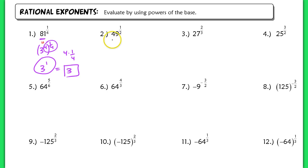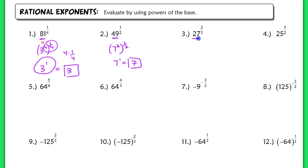In number 2, rewrite the base 49 as 7 squared. 7 squared raised to the 1 half power is also 7 to the 1st power, which is just 7. In number 3, rewrite 27 as a power of 3: 3 to the 3rd raised to the 2 thirds power. When I multiply 3 times 2 thirds, the 3s cancel, leaving me with just 2. So this is 3 squared, which is 9.